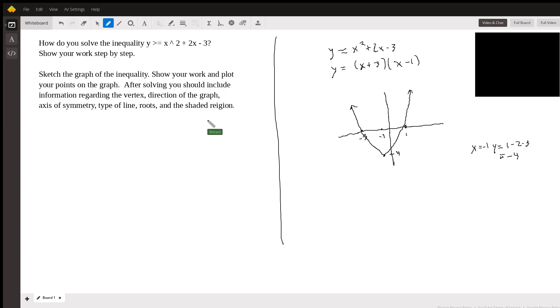Okay, so now we can start answering all these little details here. So the vertex is going to be (-1, -4). And direction, I guess, up, opens up. I think that's what's meant by direction. Axis of symmetry is x = -1. This is the axis of symmetry, which I'll abbreviate here.